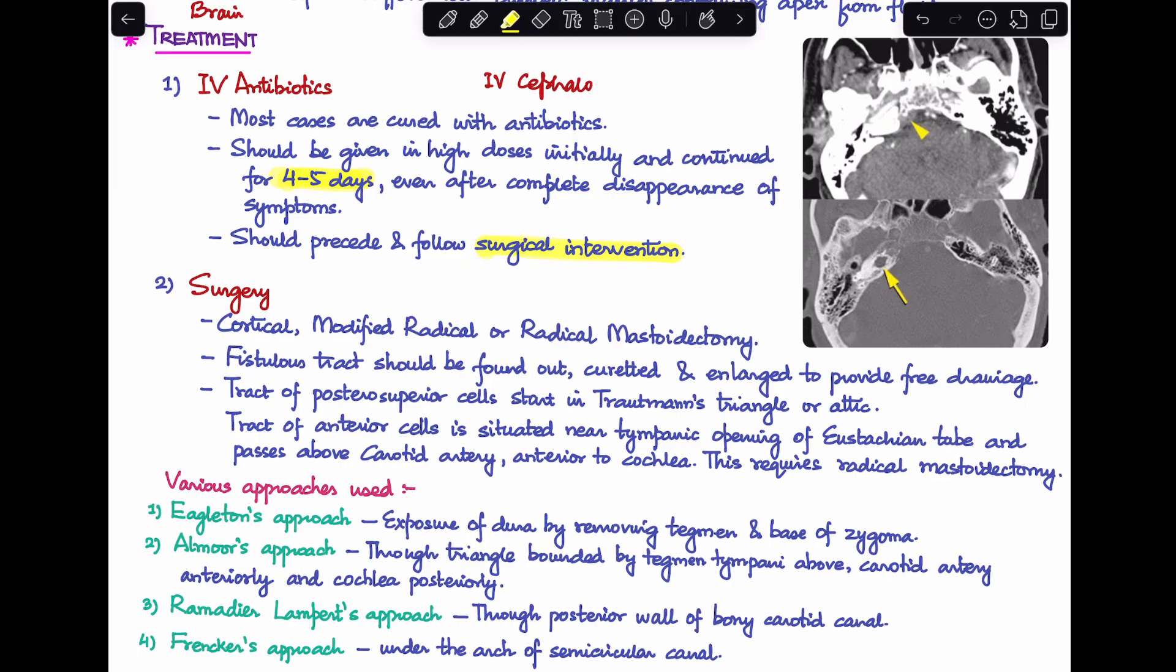Second treatment is obviously surgery when the patient has not responded to medical management or you see that the patient is actually developing further complications of petrositis. In that case you will perform a surgery, and that can be cortical mastoidectomy or modified radical mastoidectomy or radical mastoidectomy depending upon your case. The fistulous tract that is there should be first found out, curated, and enlarged to provide free drainage. The tract of posterior superior cells usually start in the Trautmann triangle or the attic, and the tract of the anteroinferior cells is situated near the tympanic opening of eustachian tube. Whenever there is an involvement of the anterior inferior cell tract, this will definitely require a radical mastoidectomy because of its location.